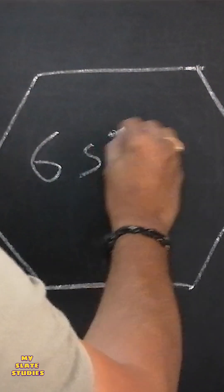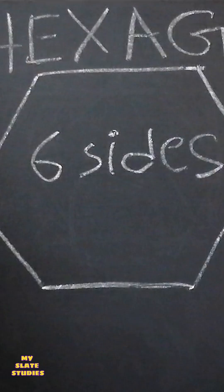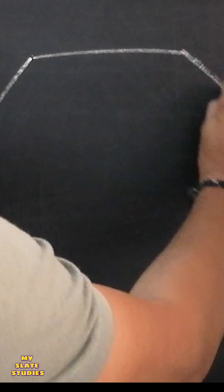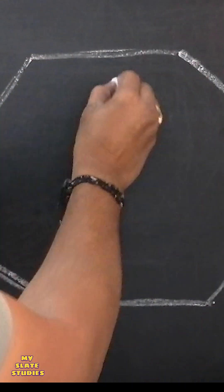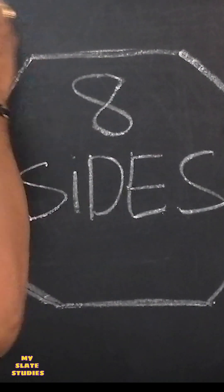Hexagon — a six-sided polygon. An octagon is an eight-sided polygon and can have equal sides and angles.